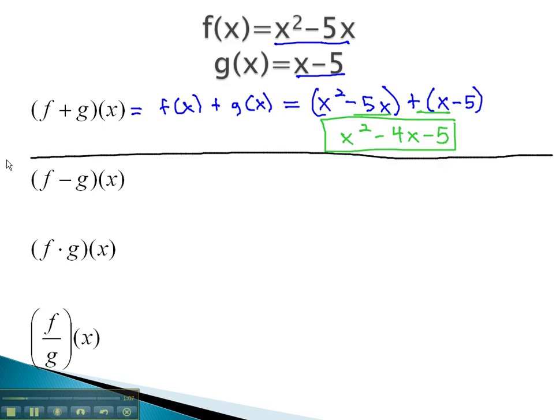Let's take a look at subtraction. Subtraction means take the f function and subtract whatever the g function is. We'll do this by replacing the f of x with what it is, x squared minus 5x, and then we'll subtract the g of x function, the x minus 5.